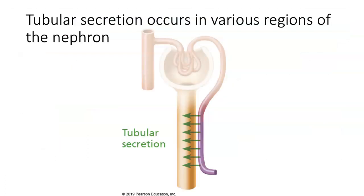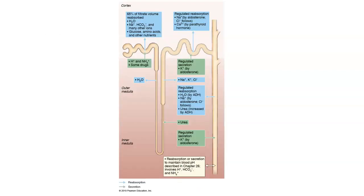This brings us to the topic of secretion. Secretion occurs in various regions of the tubule. Secretion is the movement of a solute from the blood into the tubule — something that didn't get filtered is getting put into the tubule. Potassium can be secreted into the tubule tied to aldosterone, occurring in the distal convoluted tubule and also in the collecting duct. Hydrogen ions can also be secreted, and those are secreted into the proximal convoluted tubule, which has to do with pH regulation.